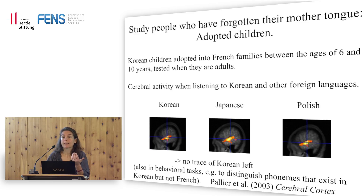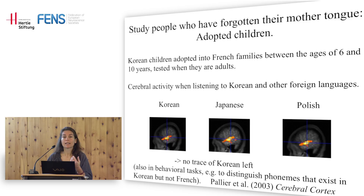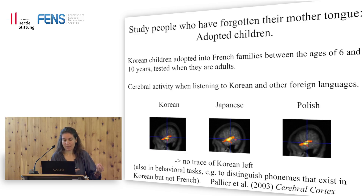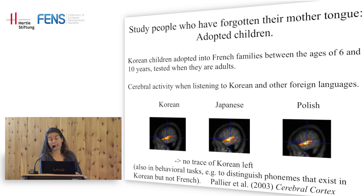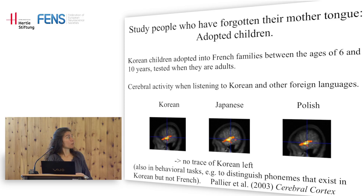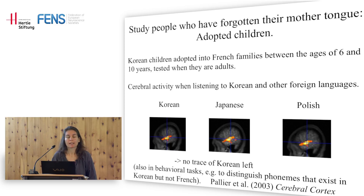He conducted an fMRI brain scan of these people while they listened to Korean (their native language), Japanese (a foreign language they'd never heard), and Polish. He found nothing — on brain scans, there are no traces of Korean at all. He also ran a battery of behavioral tests, including their ability to distinguish Korean phonemes that don't exist in French. For instance, Korean has three kinds of 'p' sounds. Nothing remained — they performed just as well or as poorly as French native subjects.